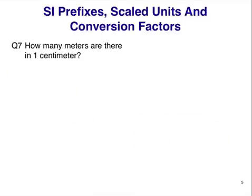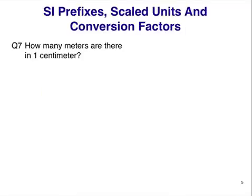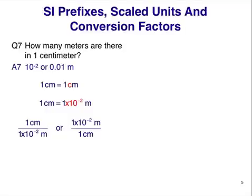How many meters are there in 1 centimeter? Pause here. The answer is 10 to the minus 2, or 0.01 meters. The strategy is to write 1 scaled unit equals 1 scaled unit like before, then to replace 1 of the centi with its meaning of 10 to the minus 2. We have our answer. We can even write two more conversion factors. These are ratios. One version and its upside-down version.